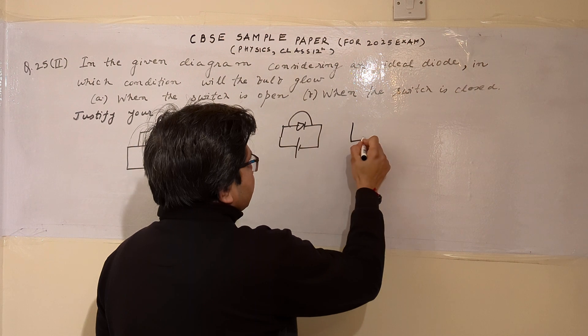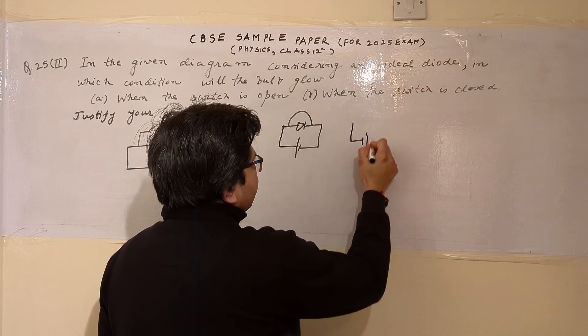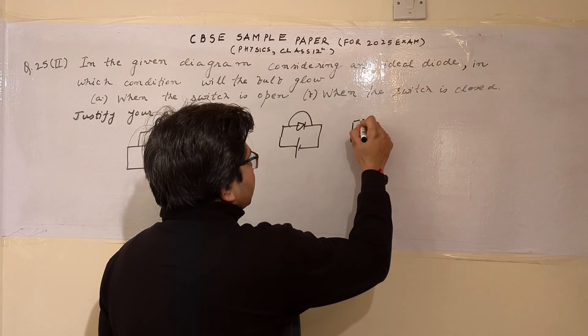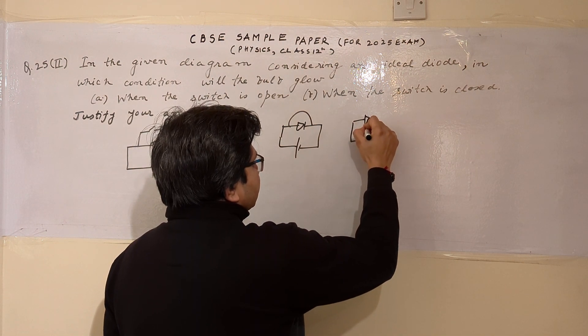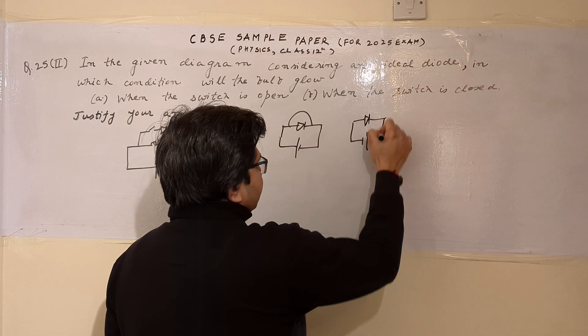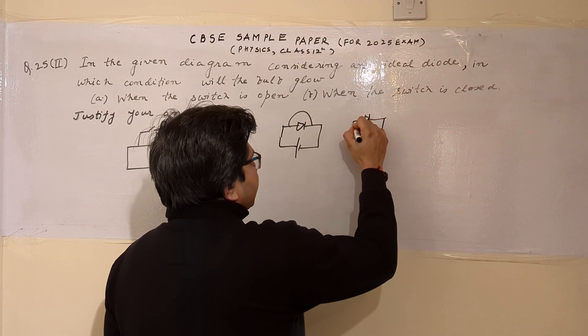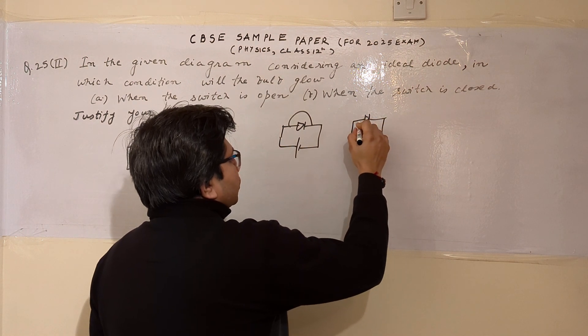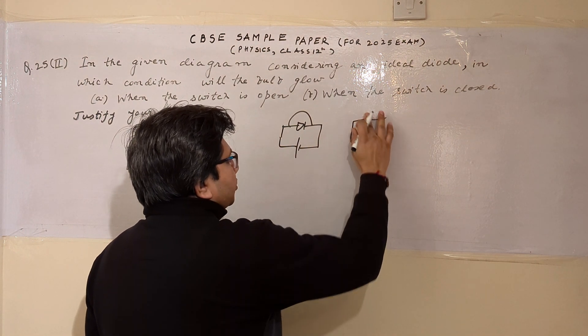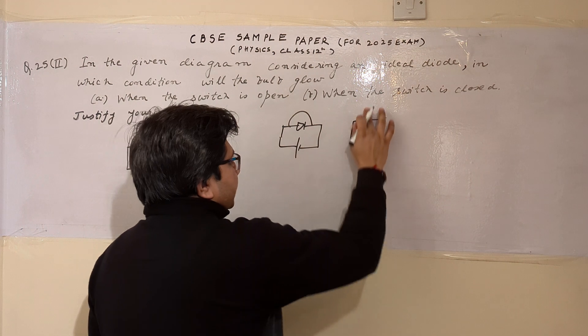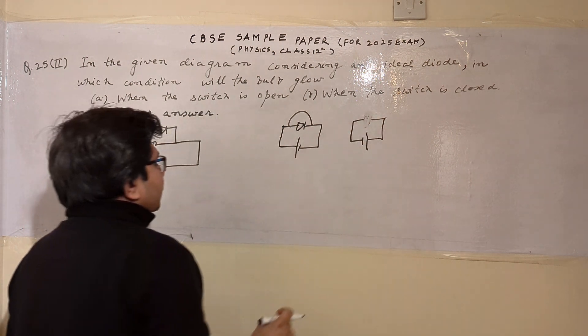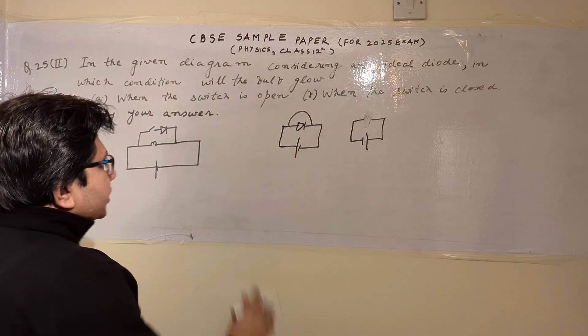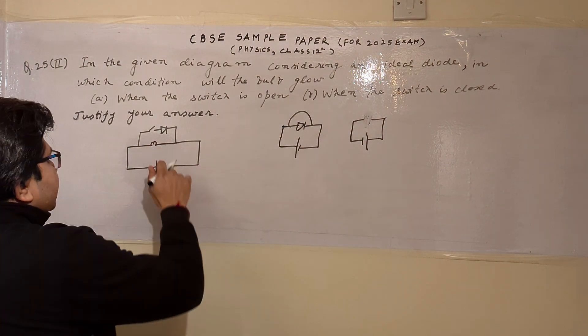Whereas in reverse bias, the diode acts as an open circuit — meaning a broken wire. It behaves as a broken wire.